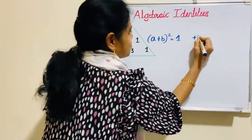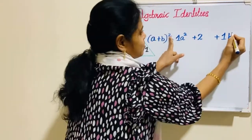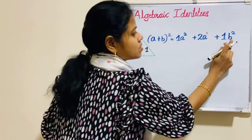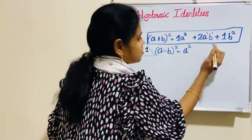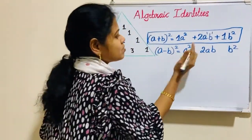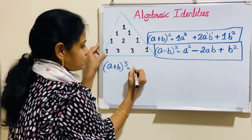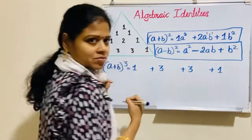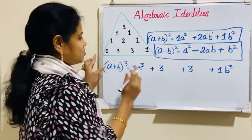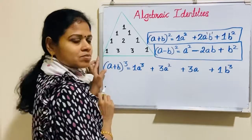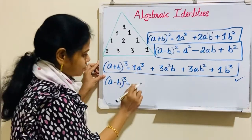Identity 1: (a+b)² = a² + 2ab + b². Next identity: (a−b)² = a² − 2ab + b². Next: (a+b)³ = a³ + 3a²b + 3ab² + b³. Next: (a−b)³ = a³ − 3a²b + 3ab² − b³.